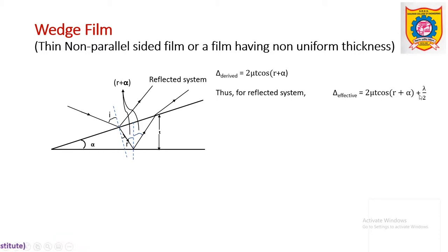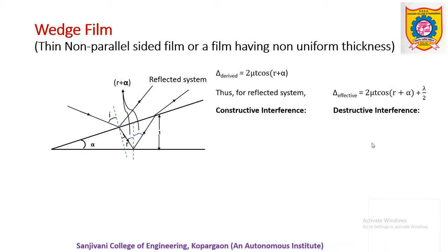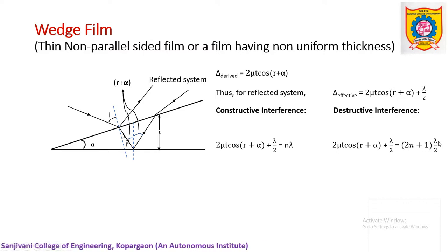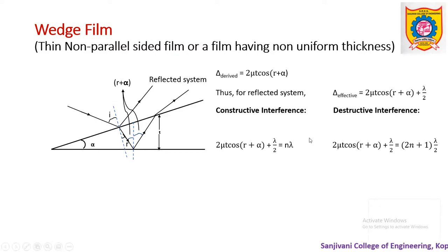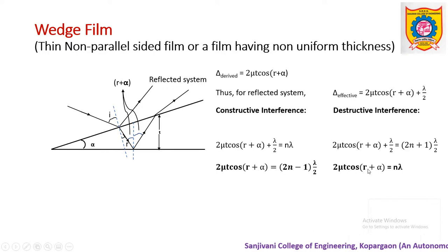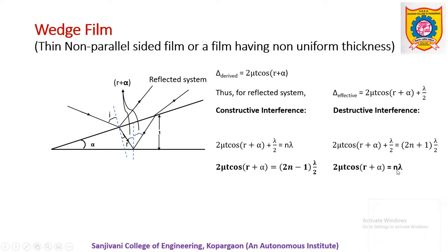For simplicity we consider only the plus sign. From this effective path difference we obtain the conditions of constructive and destructive interference by recalling their basic conditions. Equating with n·λ for constructive gives 2μt·cos(r+α) = (2n−1)λ/2, which is the expression for constructive interference. Equating with (2n+1)λ/2 for destructive gives 2μt·cos(r+α) = n·λ, which is the formula for destructive interference for the reflected system.